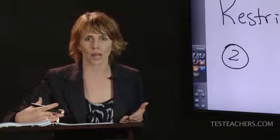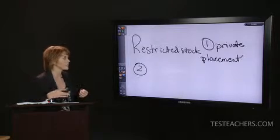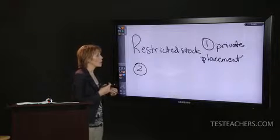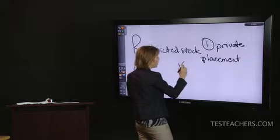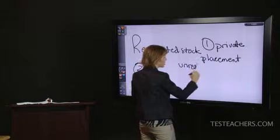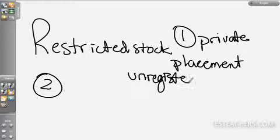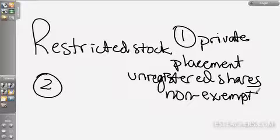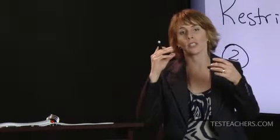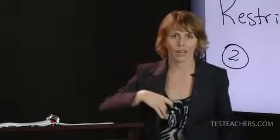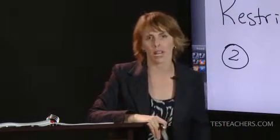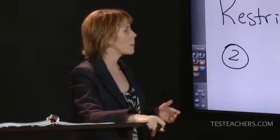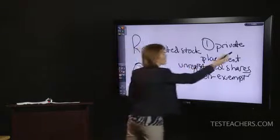This is called SEC Regulation D. It allows a company to raise money by selling unregistered shares. These shares are what we call non-exempt, meaning they should be registered. So it allows the company to sell shares that should be registered, but they don't have to register them because of how they're selling them — a private placement. That's one of the categories of restricted stock.